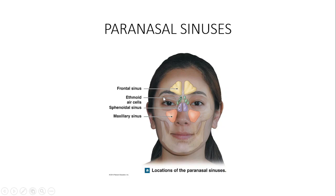For example, in upper respiratory tract infections: as we breathe in air through the nose, the sinuses help heat the inhaled air. If there is any infection from the sinuses, it can spread into the respiratory tract and cause upper respiratory tract infection. In the same way, upper respiratory tract infections can cause sinusitis, and from sinusitis the infection can easily spread into the orbit, causing orbital cellulitis, which is an ophthalmic emergency.